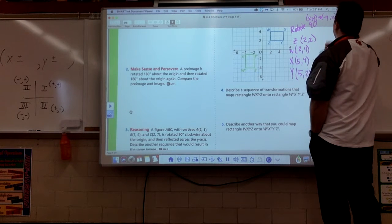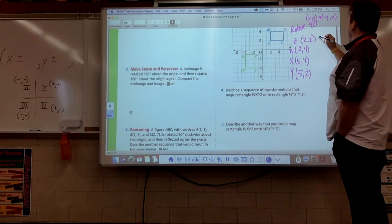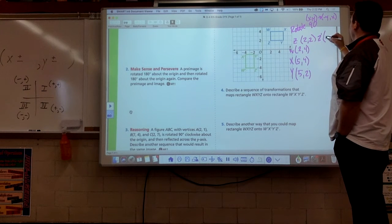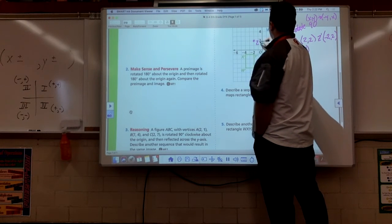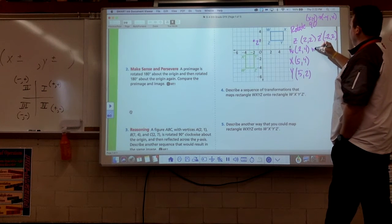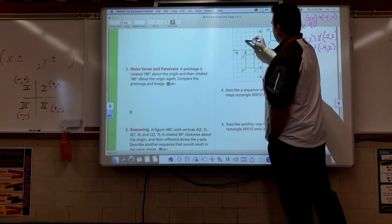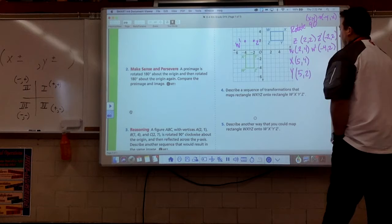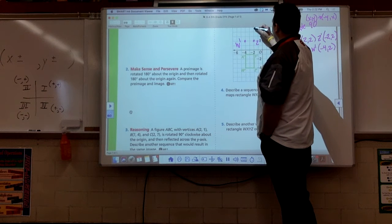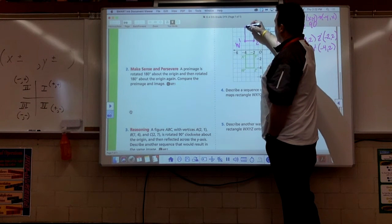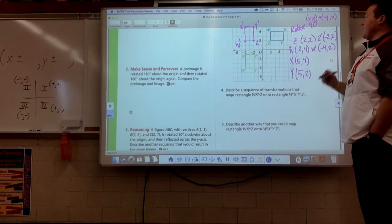These two got to flip. So Z prime should be at negative 2, comma 2. Negative 2, 2. There you are, Z prime. W prime is going to be at negative 4 and 2. And really, guys, here's the deal, we could do the other two. I can already tell you they're going to be right here and right here. This is going to be Y prime, it's going to be X prime. So we rotate it 90 degrees.